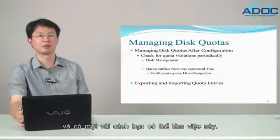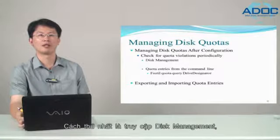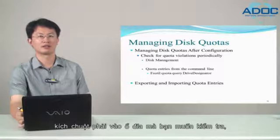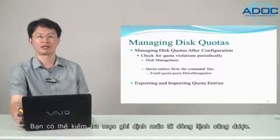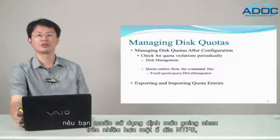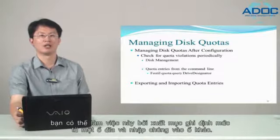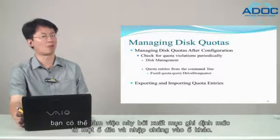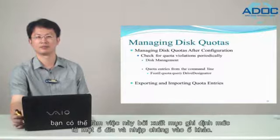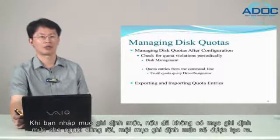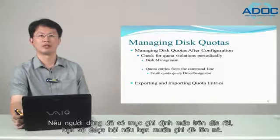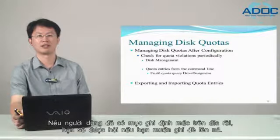There are several ways you can check for quota violations. One way is to access Disk Management, right-click the volume you want to check, and select Properties. You can then check the current disk usage of users and see whether there are any quota violations. You can also check quota entries from the command line. If you want to use the same quotas on more than one NTFS volume, you can export the quota entries from one volume and import them on another. When importing, if a quota entry already exists for a user, you will be asked whether you want to overwrite it.